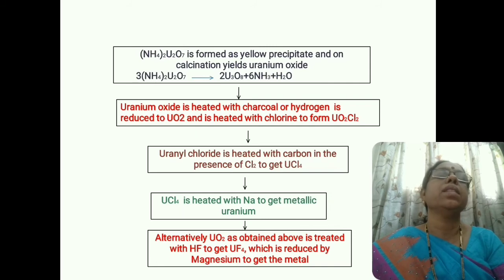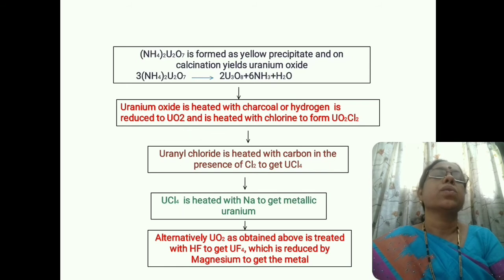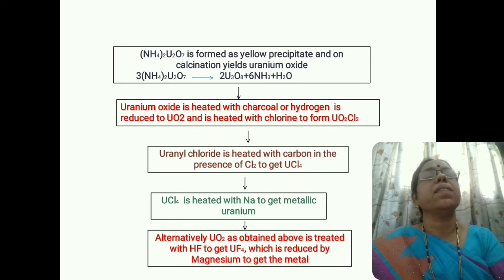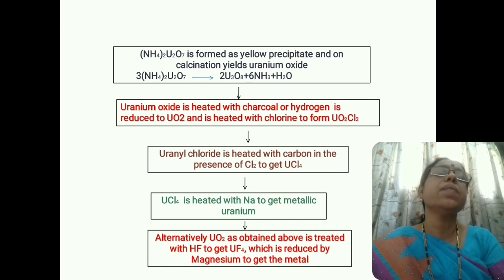This uranium oxide is then heated with charcoal or hydrogen, and is reduced to uranium dioxide (UO₂). The uranium dioxide is heated with chlorine to form uranyl chloride. The uranyl chloride is then heated with carbon in the presence of chlorine to form uranium tetrachloride (UCl₄). This uranium tetrachloride is heated with sodium to obtain metallic uranium.